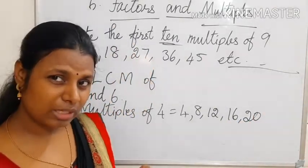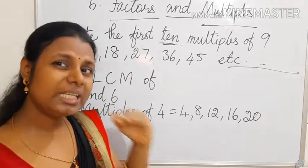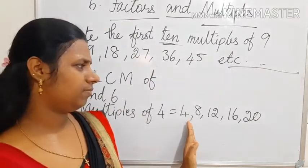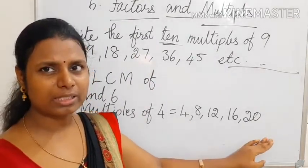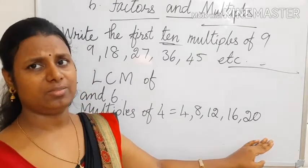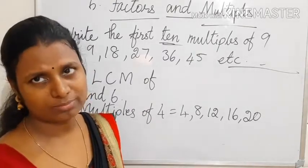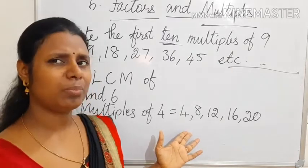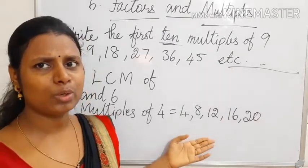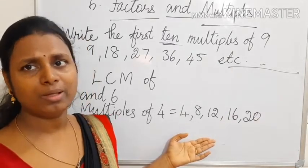Here we are going to select the lowest or least number. I have written 5 numbers here. If we need it, we can write a little more. Don't keep on writing. We are going to select the small common number. You can write a minimum of 5 numbers.